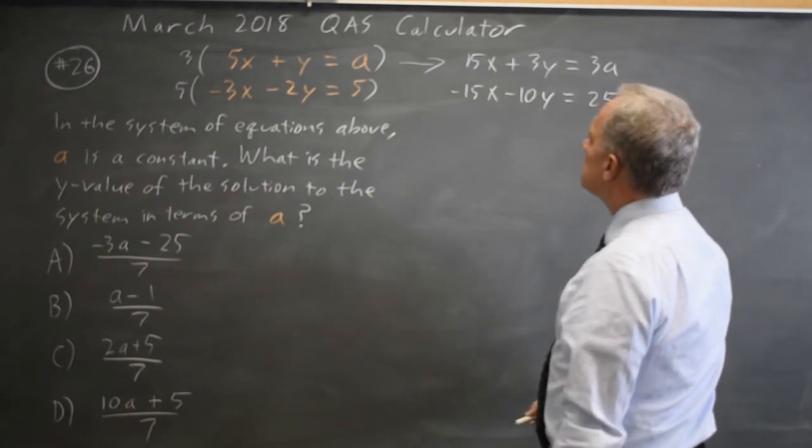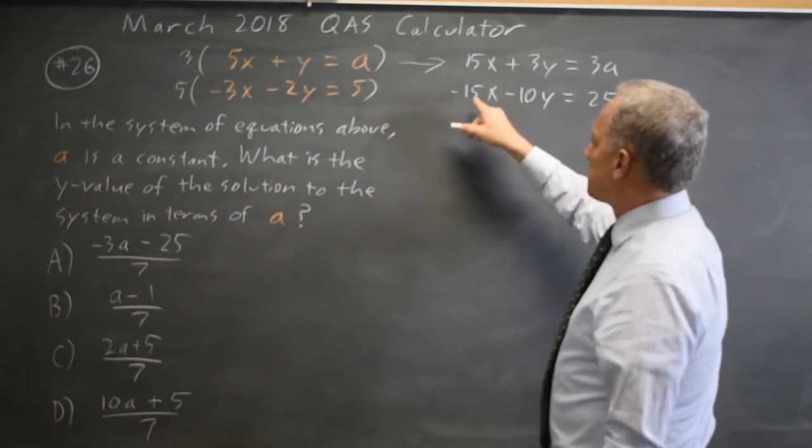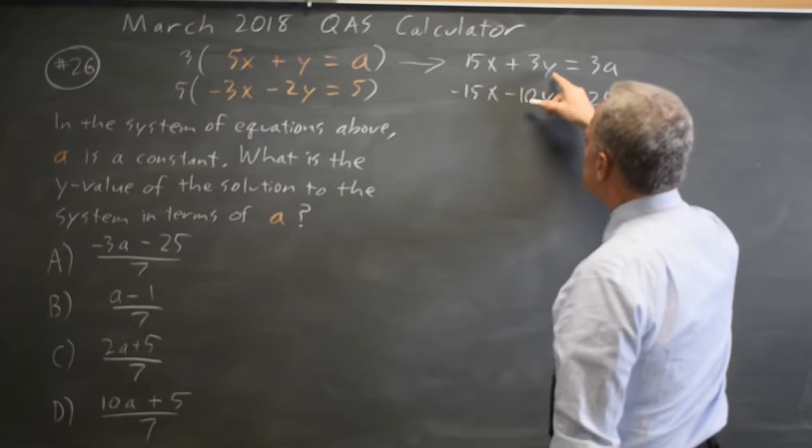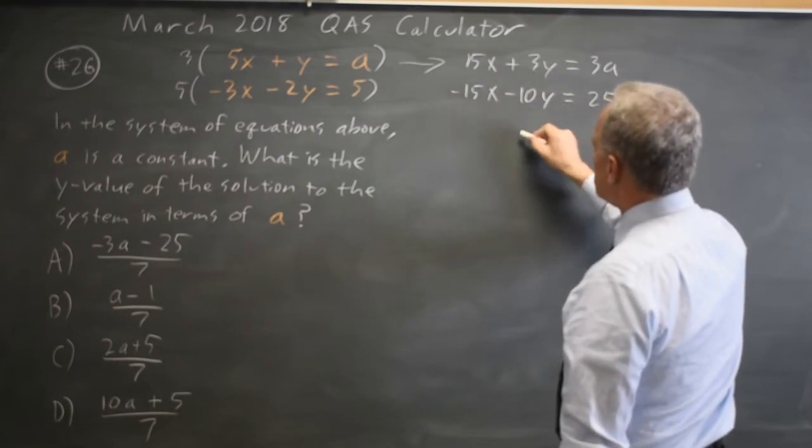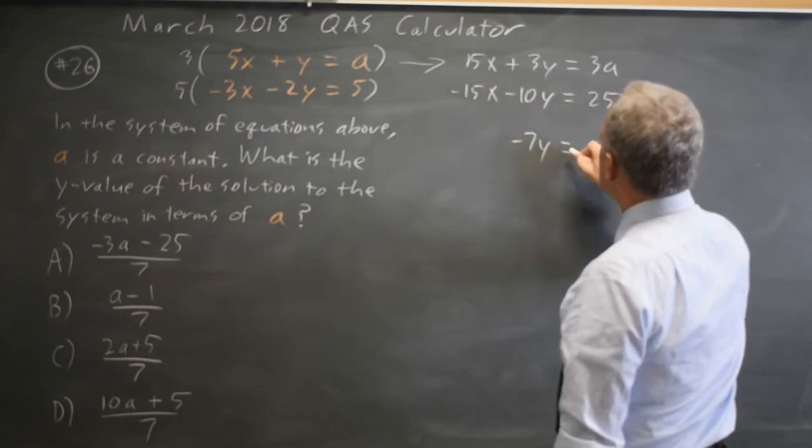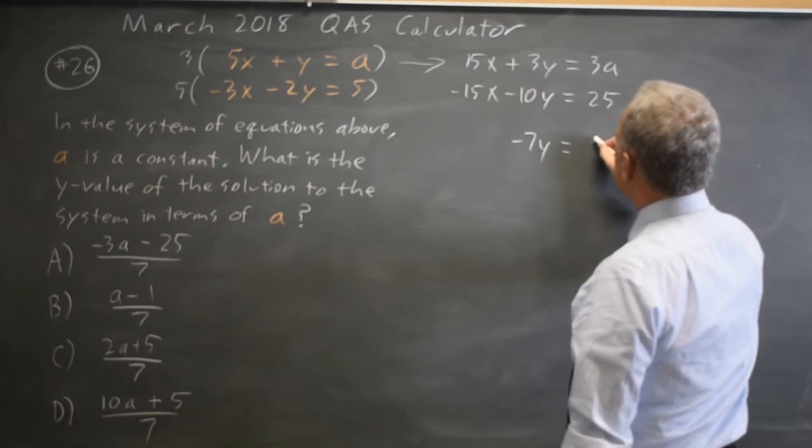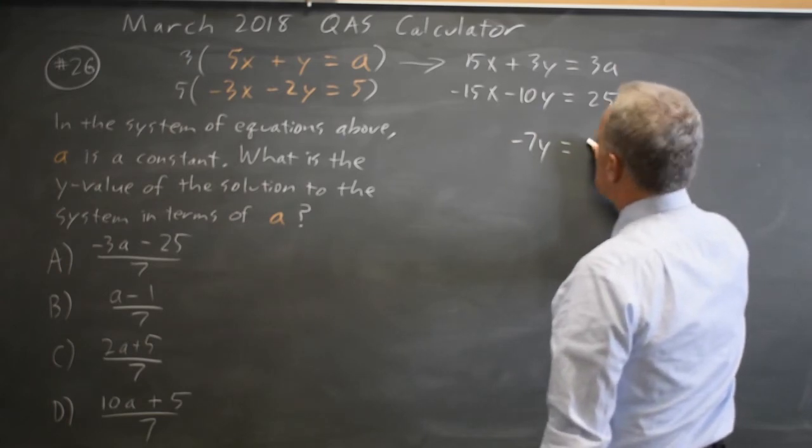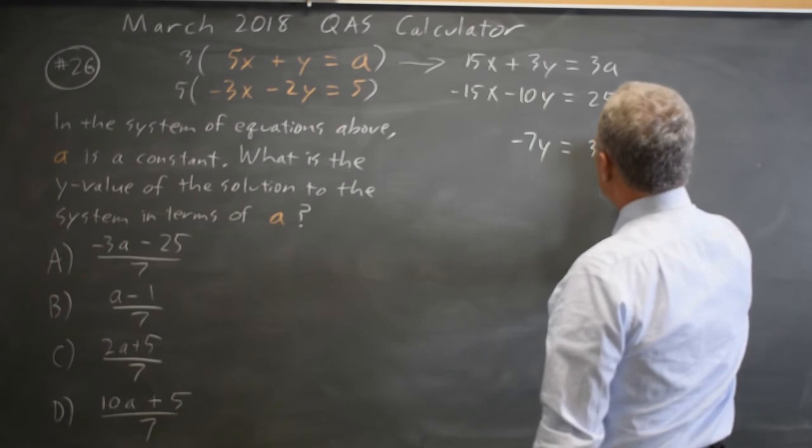When I add these two equations, 15x minus 15x is 0x, and 3y minus 10y is negative 7y equals 3a plus 25.